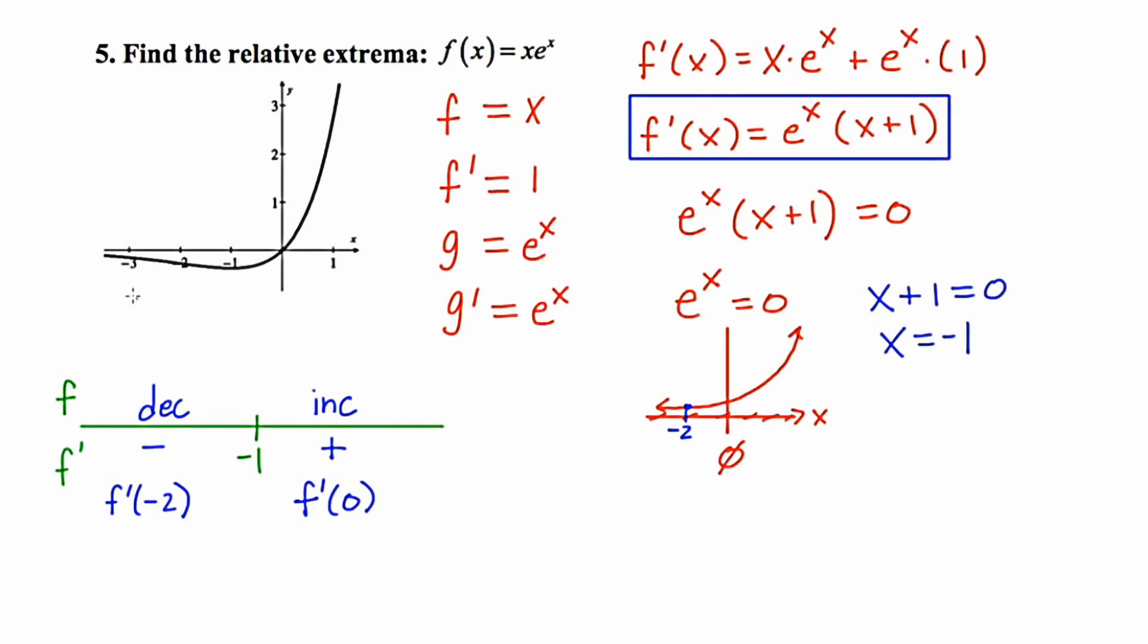And again, we could just cheat by looking up here. So the graph is decreasing until it gets to negative 1. And then it is increasing, which means we have a relative minimum.